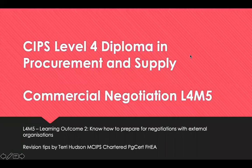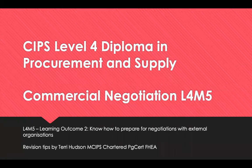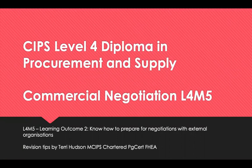Hello, welcome to revision tips for CIPS Level 4 Diploma in Procurement and Supply. This is Commercial Negotiations Module 5, Learning Outcome 2: how to prepare for negotiations. We're going to look at the types of costs and prices in commercial negotiations, the economic factors that impact them, the criteria that could be used and the resources that would be required.